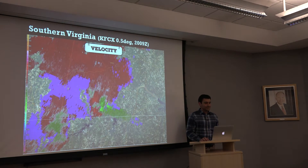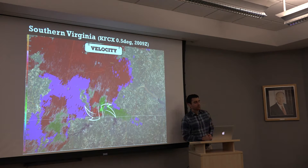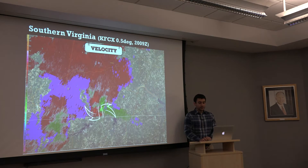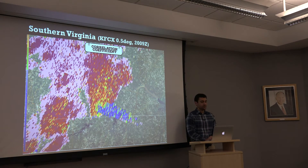Looking at our velocity images, we see our area of outbounds — our radar is up to the northwest — and we have an area of inbounds. This looks interesting; maybe we have something trying to organize here, perhaps suggesting the potential for tornado genesis or at least low-level mesocyclogenesis. Let's look at correlation coefficient, which gives us a nice idea about what we're dealing with in terms of data quality.